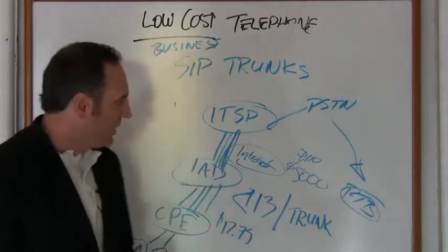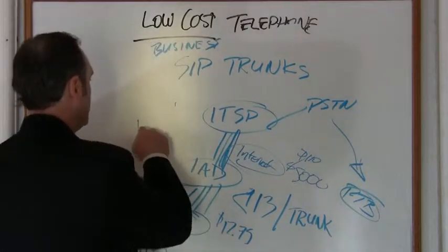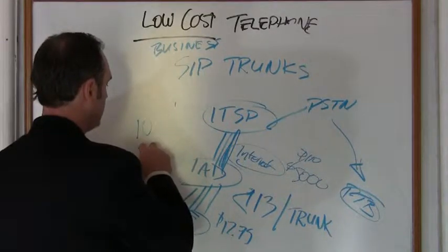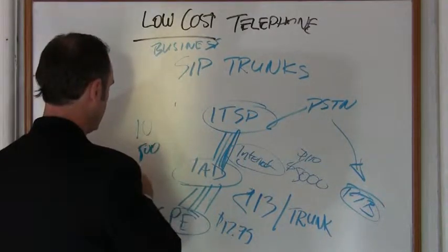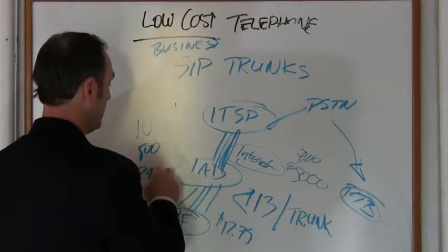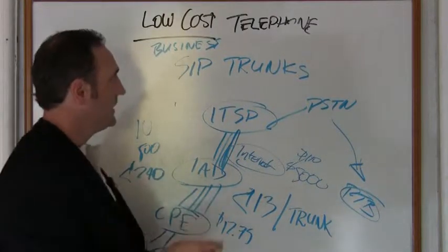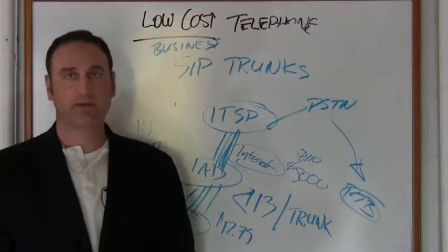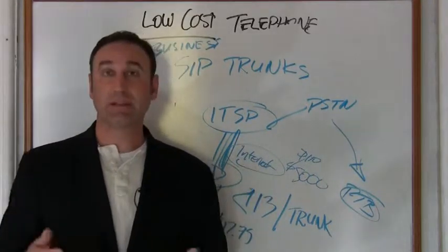When you boil it down, take a 10-line business with 5,000 minutes—you're looking at less than $250, about $240. That's quite a significant savings compared to some of the Selex and Ilex out there.